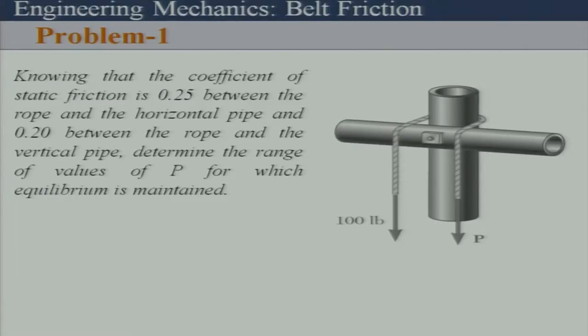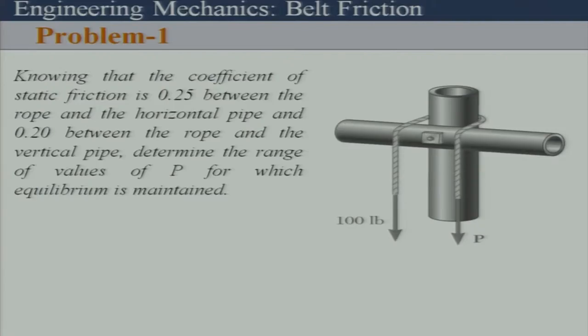After working through the numbers, 411 lb is the upper range answer — that corresponds to impending motion downward, where we expect P to be the largest. 24.3 lb is the lower end answer. So the two answers are 24.3 lb and 411 lb.